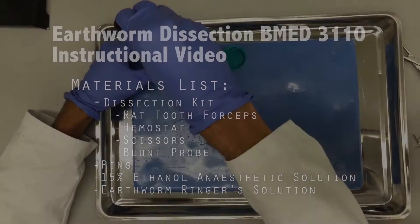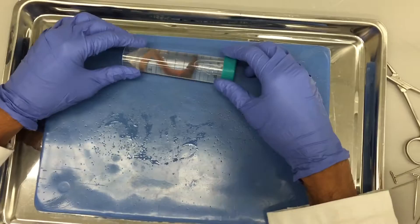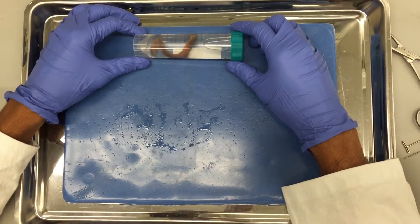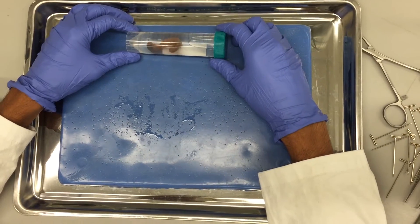Once you have obtained and rinsed off an earthworm, you will place it in 15% ethanol solution to anesthetize it. Leave it in the ethanol for about 5 minutes or until there is no visible movement.